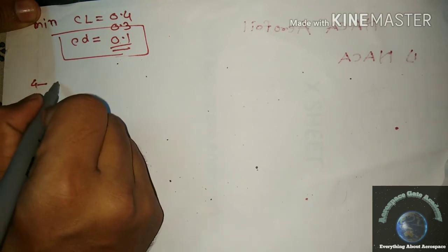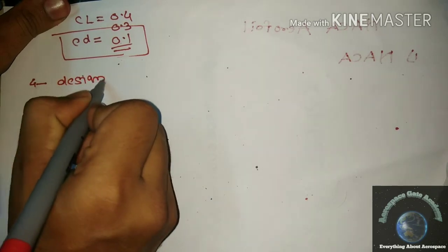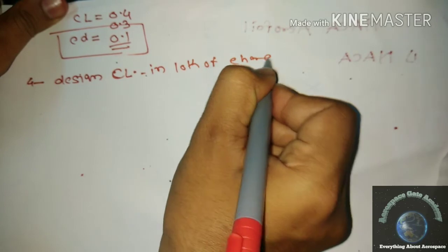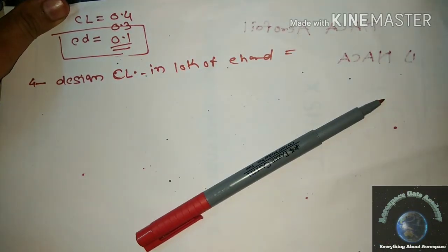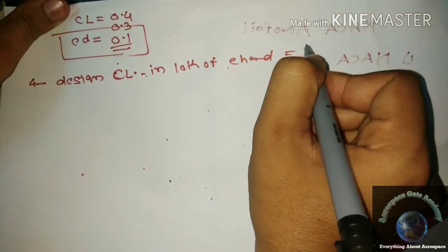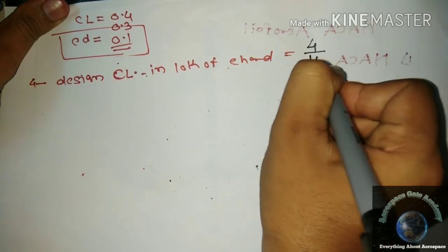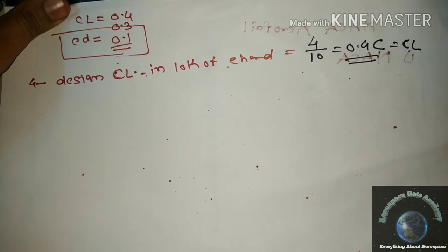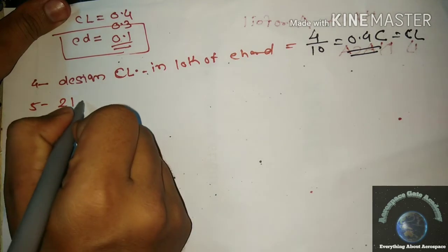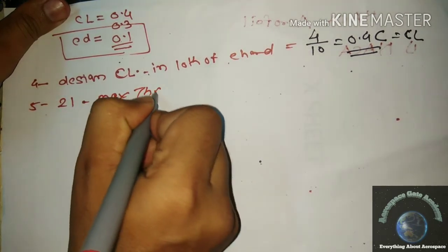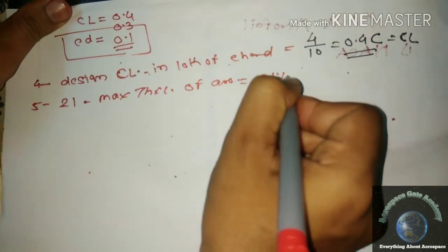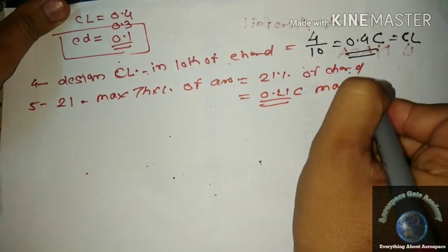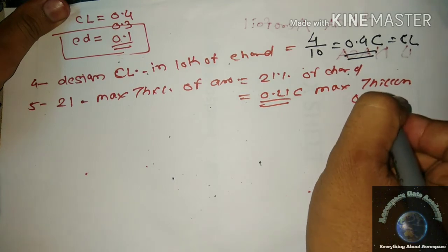The fourth digit gives the design lift coefficient in tenths of the chord. The digit is 4, so dividing by 10 gives a design CL of 0.4. The last two digits are 21, representing the maximum thickness of the airfoil — 21% of the chord, or 0.21C.